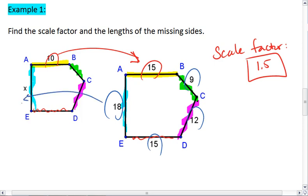18 divided by 1.5 is going to be 12. 15 divided by 1.5 again is 10. 12 divided by 1.5 will give us 8. And 9 divided by 1.5 gives us 6.